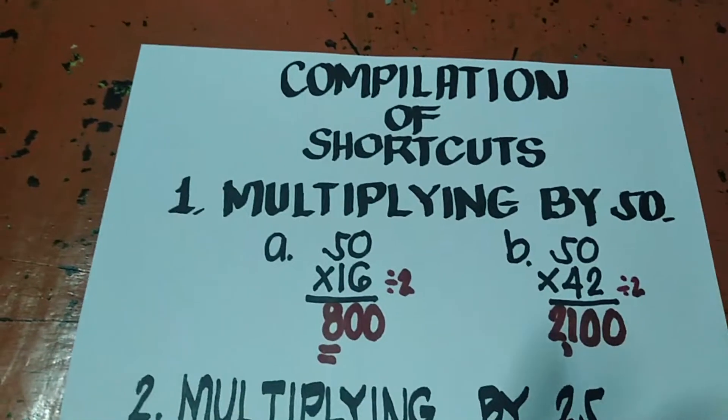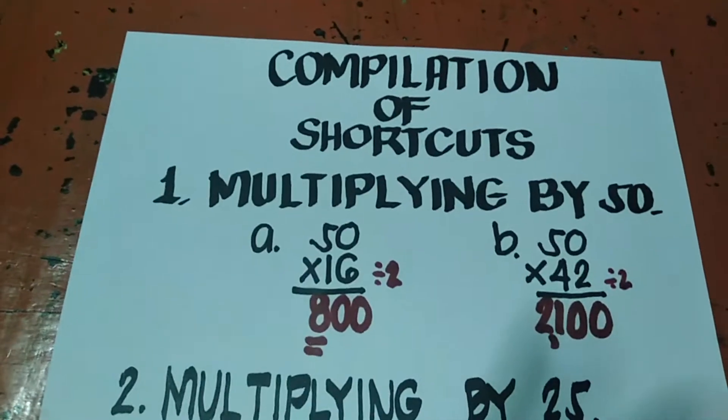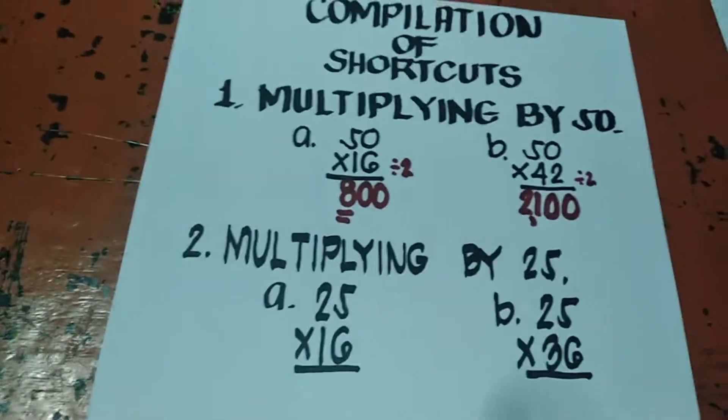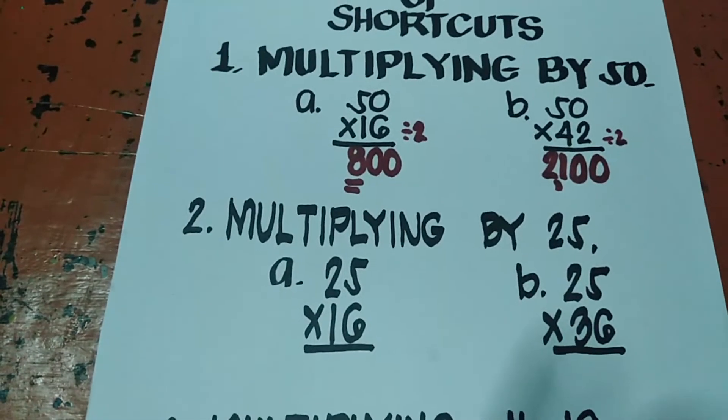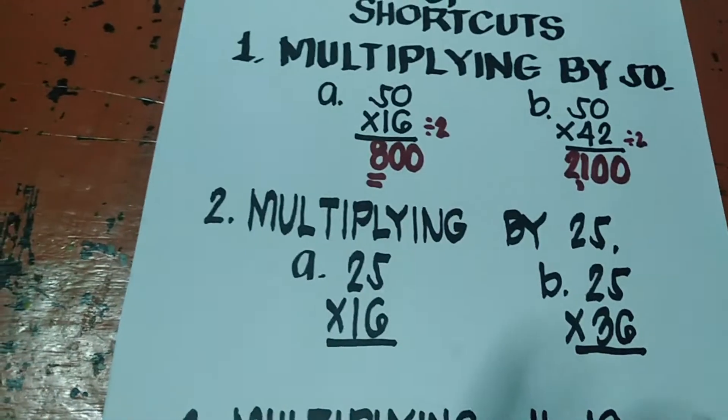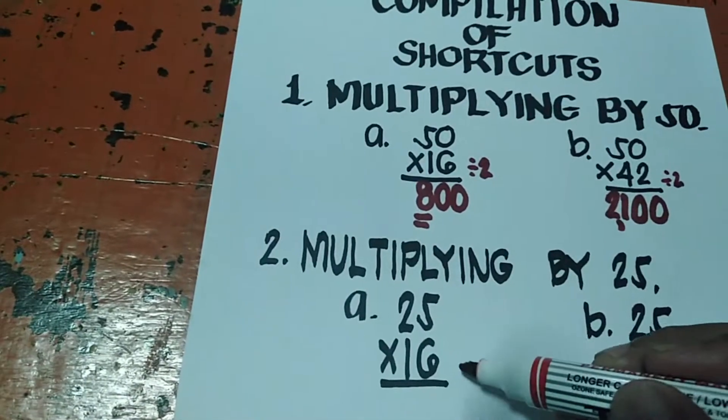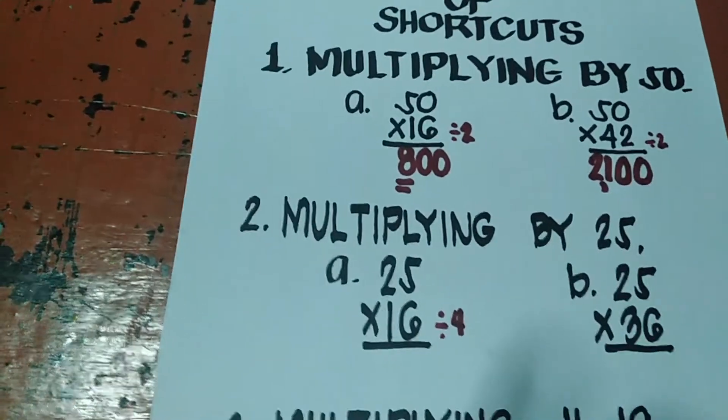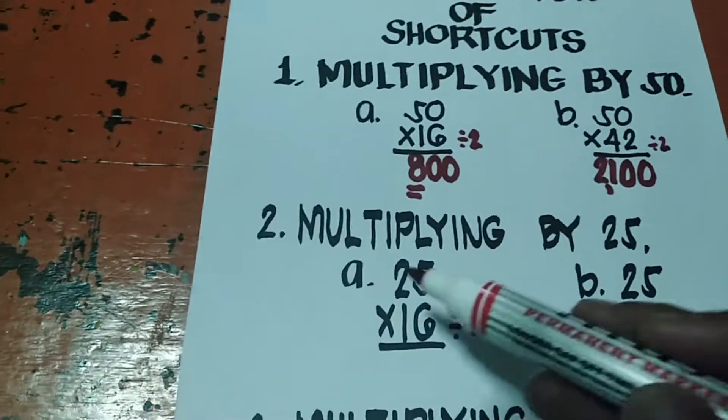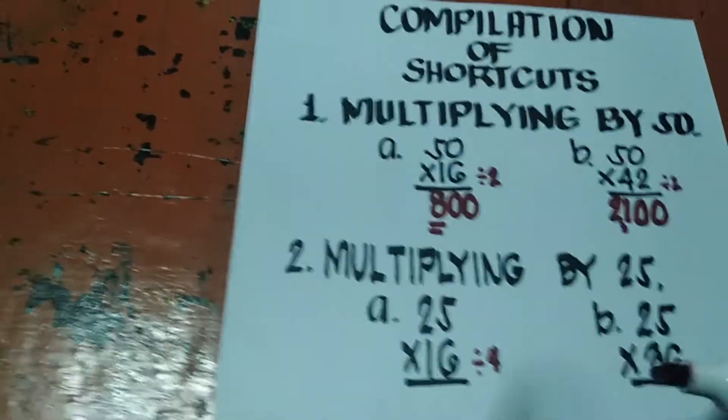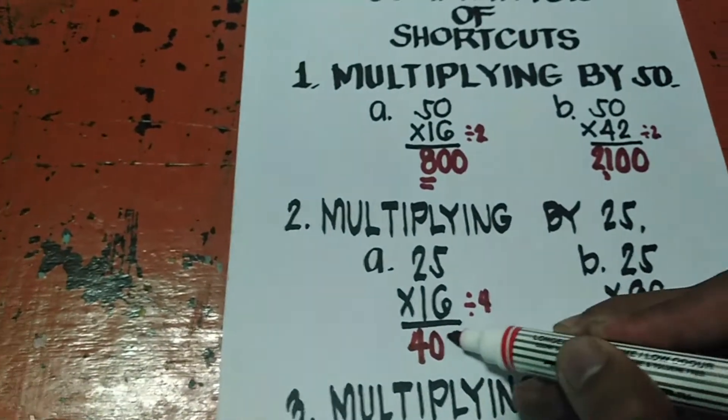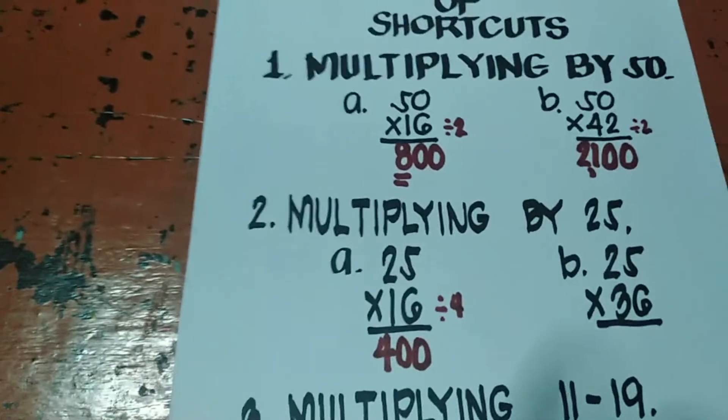Naintindihan ba natin yung shortcut? Punta tayo dun sa multiplying by 25. Tapos na yung 50. So 25 naman. May restriction dito. Kailangan yung multiplier niya is divisible by 4. Pag hindi siya divisible by 4, gagamitan mo na siya ng long method. So 25 times 16. Yung 16, didivide natin sa 4 is 4. Tapos magdadagdag ka rin ng 2,0. So ang answer, 400.